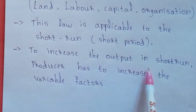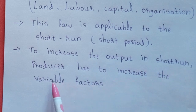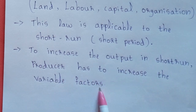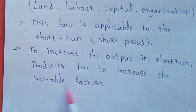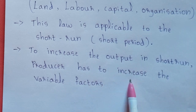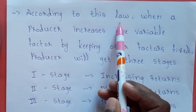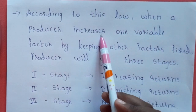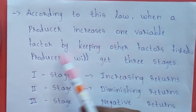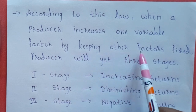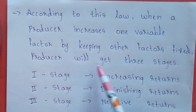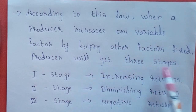To increase the output in the short run, a producer has to increase variable factors. In the short run, to increase output, variable factors means labour must be increased. When a producer increases one variable factor by keeping other factors fixed, the producer will get three stages.